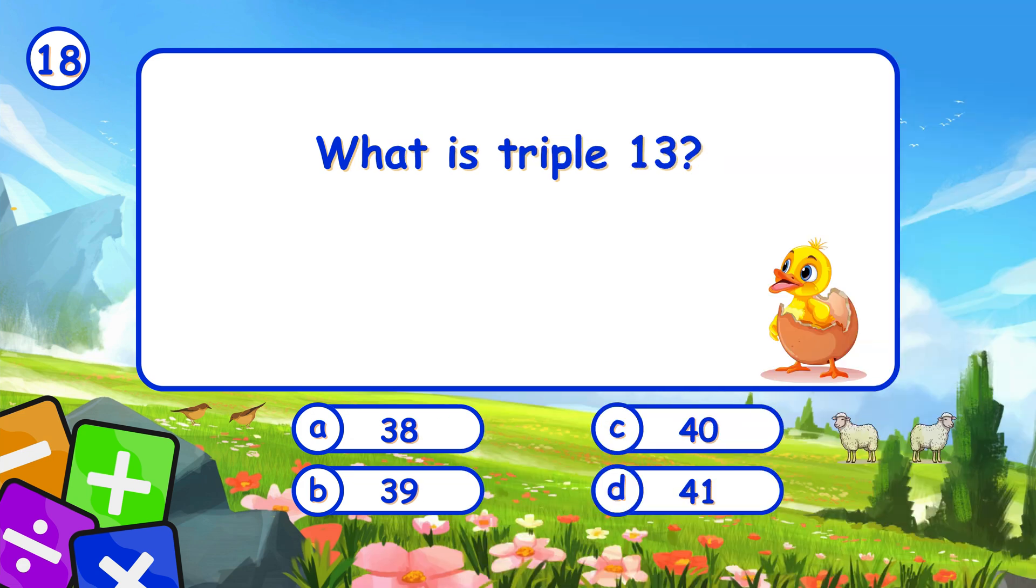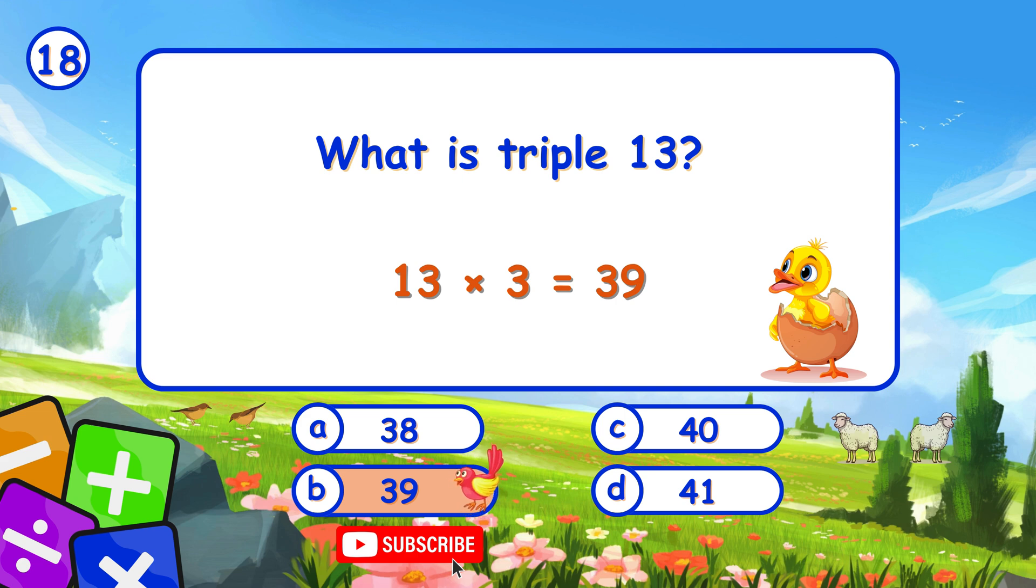What is triple 13? It's B, 39. Triple of 13 is 39.